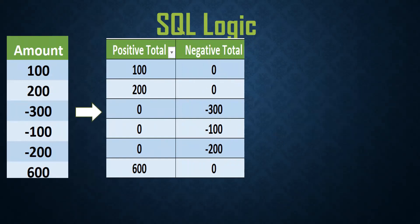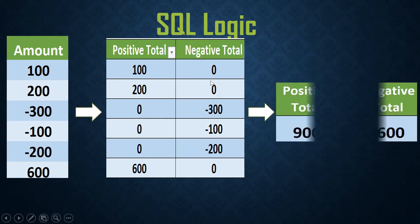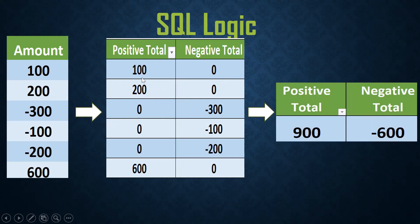Remember: if you want to do any conditional handling in SQL, go for the CASE statement. The requirement is: I want to take the positive value, so CASE WHEN amount >= 0 THEN amount ELSE 0 END. Same thing for negative: CASE WHEN amount < 0 THEN amount ELSE 0 END. Then I want to do the addition — 100 plus 200 plus 900 for positives, and sum the negatives.